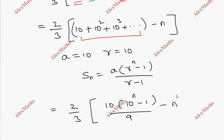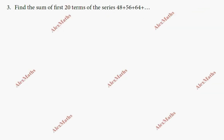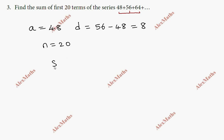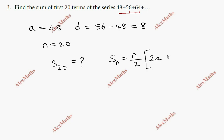Question number three: the series has first term a = 48, common difference d = 8. With n = 20, we use S_n = n/2 × (2a + (n−1)d). So S_20 = 20/2 × (2×48 + (20−1)×8).